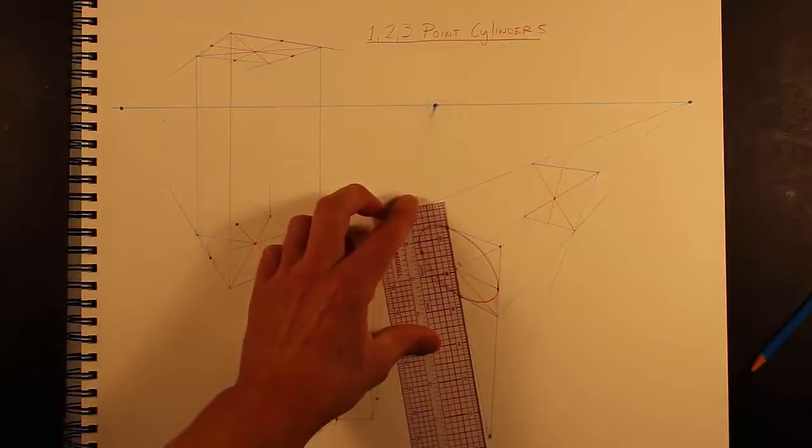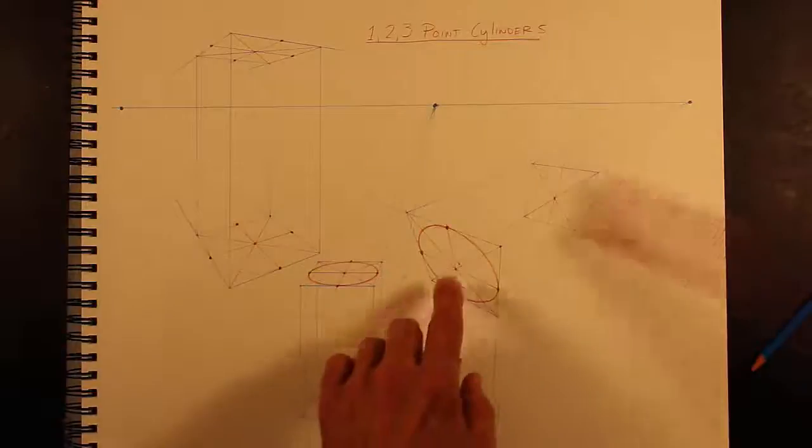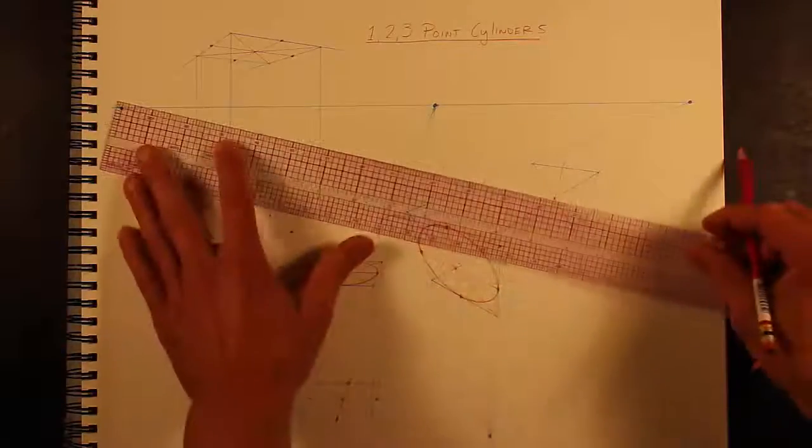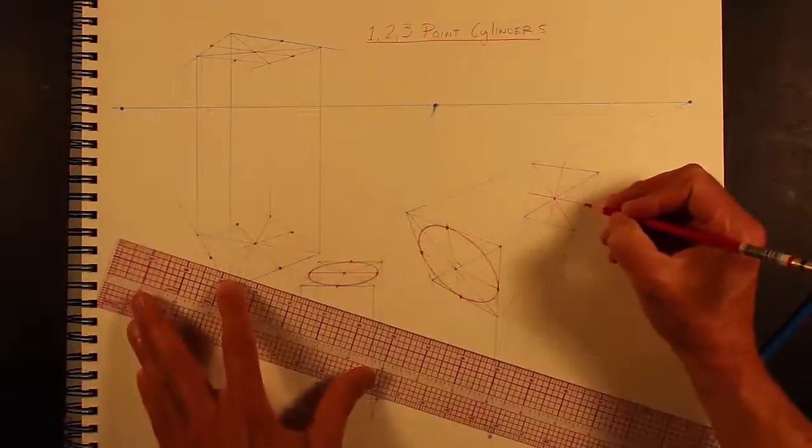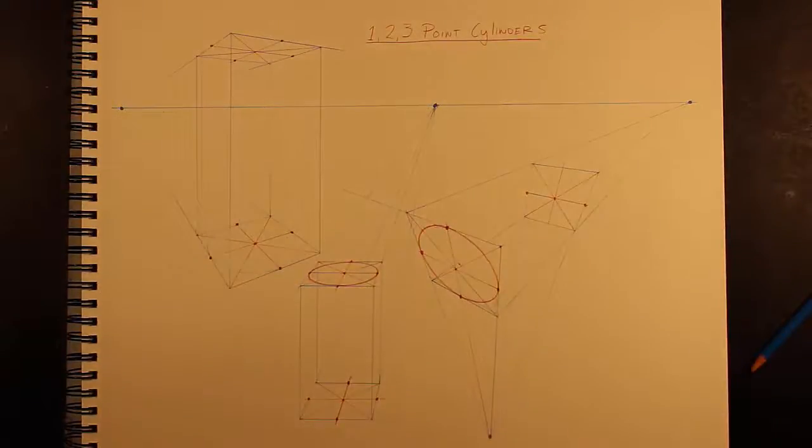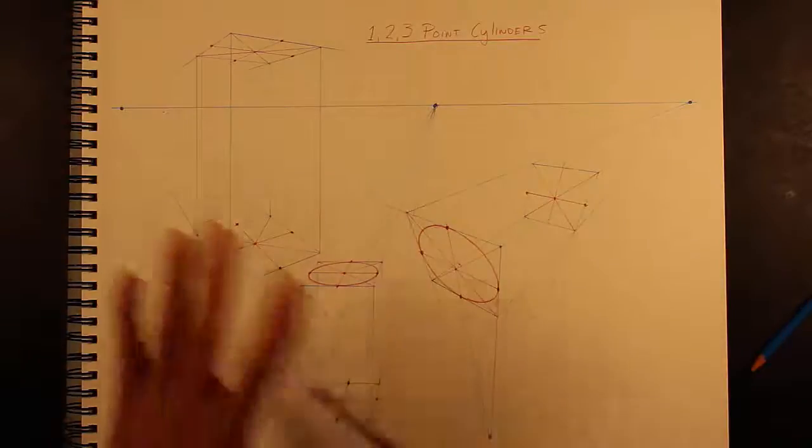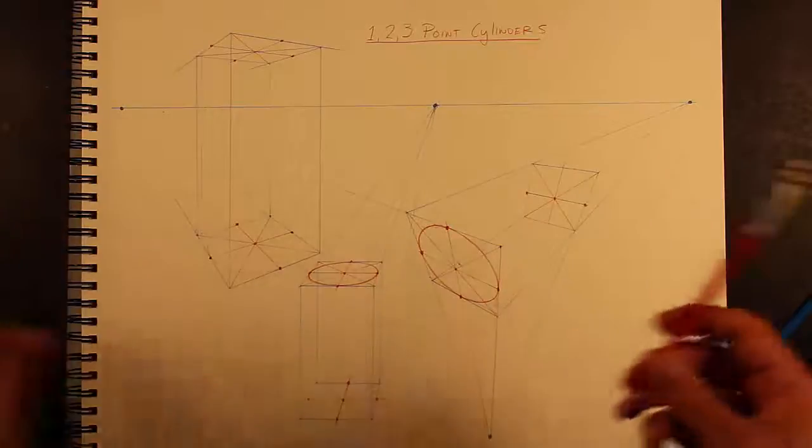Now with these, all of these are going to a vanishing point, one of the three vanishing points, in order to get these. I've got one left here to construct right there. Okay, so basically once you get them, the one, two, and three point cubes are done all the same.